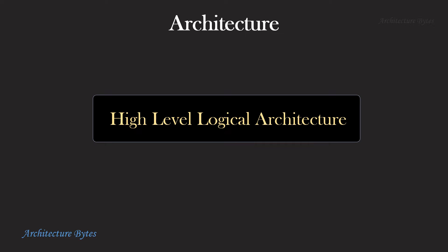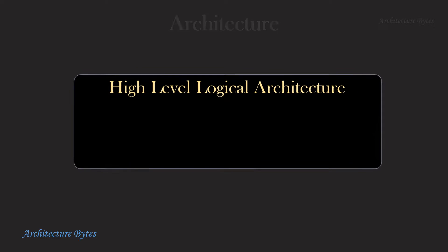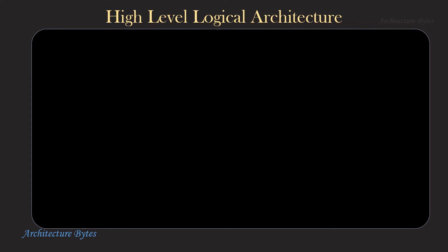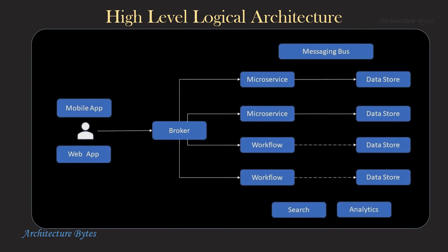With all the information we have, we should be able to create a high-level logical architecture. This is what our high-level logical architecture may look like. Mobile and web apps send requests to a broker which in turn forwards the request to microservices. In addition, we have data stores, a messaging bus, analytics, and search.